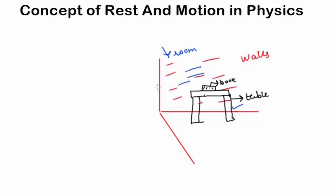To be more precise, the state of motion or state of rest of a body should be defined with respect to its surroundings.